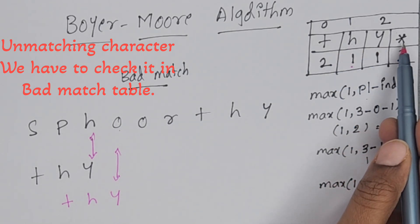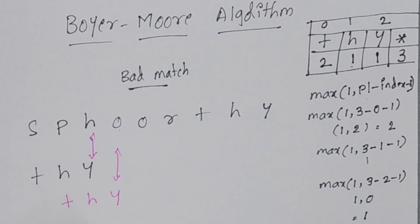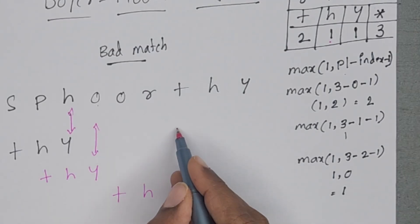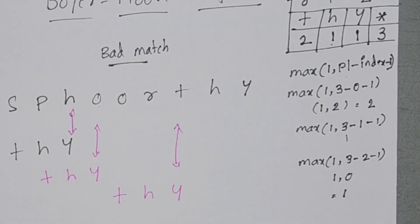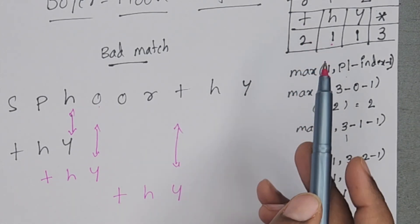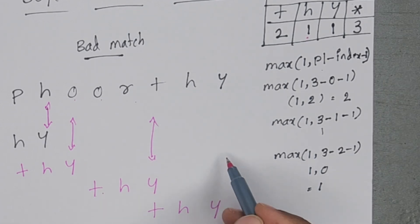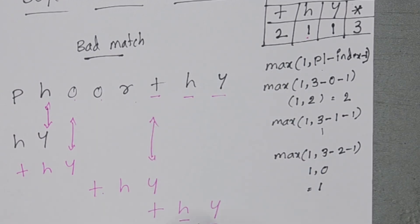If the character is not present in the table, we take the asterisk value, which is 3. So we shift 3 characters to the right — 1, 2, 3. Now comparison starts here with T-H-Y. The last two characters are T and Y, not matching. T is present in the table — T's value is 2. We shift 2 characters right. Now the last characters are Y and Y — matching. Then H and H — matching. Then T and T — matching. Like this we find whether the pattern is present in the string.